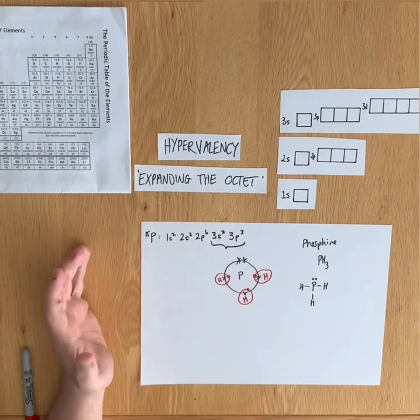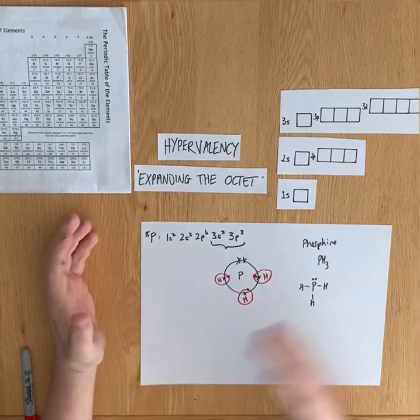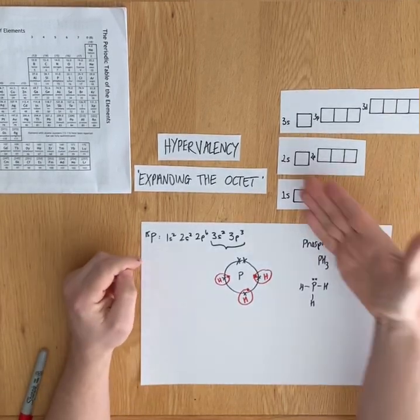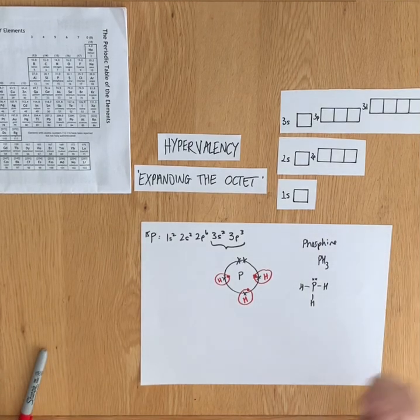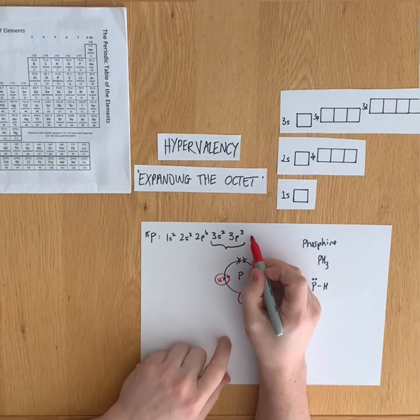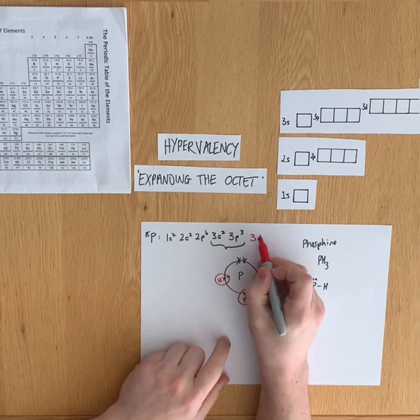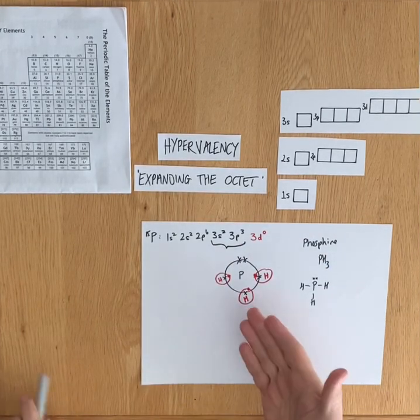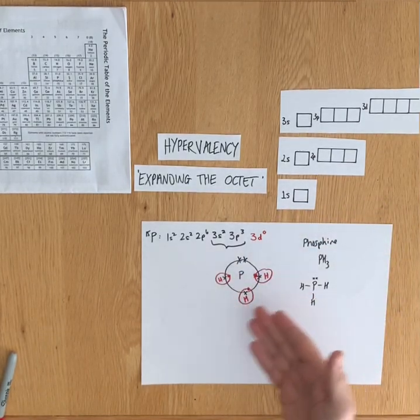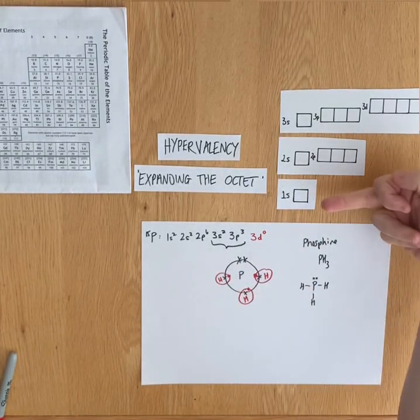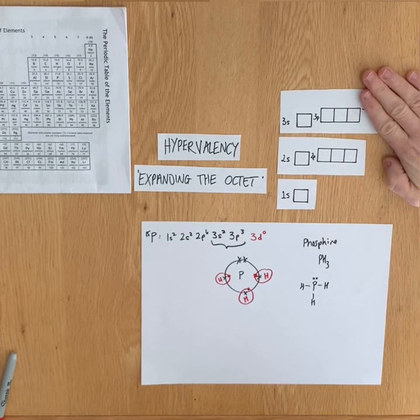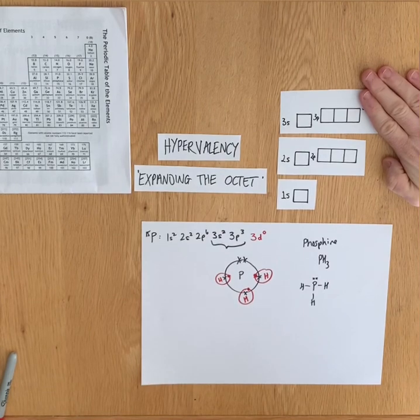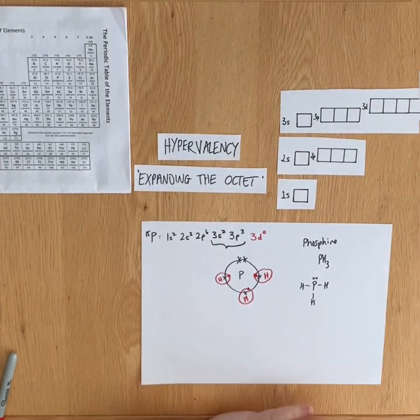So now, using GCSE standards, how is that possible? The shell only has eight electron spaces. Not true. We can see the third energy level has actually got—if I fill this out fully, I could say 3d⁰. This phosphorus is now filled by covalently bonding with three hydrogen atoms. It's filled its 1s, 2s, 2p, 3s, and 3p orbitals. However, it does have a completely empty 3d subshell.